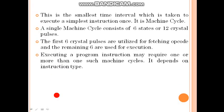This is the smallest time interval taken to execute the simplest instruction once. It is called a machine cycle. A single machine cycle consists of 6 states or 12 crystal pulses. The first 6 crystal pulses are utilized for fetching of code and remaining 6 are used for execution.